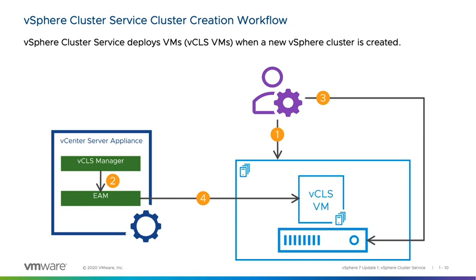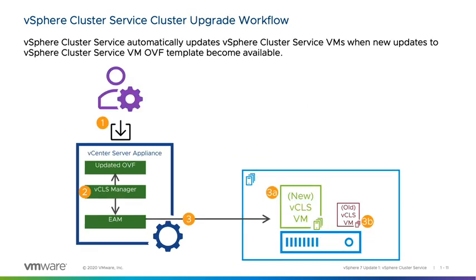vSphere Cluster Service automatically updates vCLS VMs when new updates to the vCLS VM OVF template become available. When a vSphere administrator updates or patches vCenter Server with a new version of the vCLS VM OVF template, the Cluster Service Manager observes the new version and updates the EAM agency. EAM then initiates an upgrade of the vCLS VMs: a new vCLS VM is deployed using the new OVF template and powered on, and the old vCLS VM is shut down and deleted. This process repeats until all vCLS VMs are replaced with the new version.